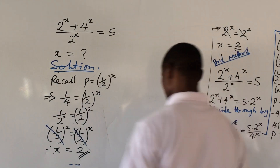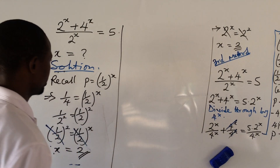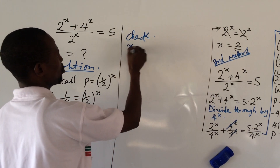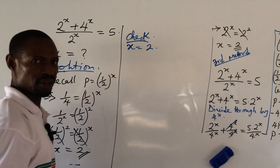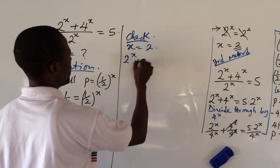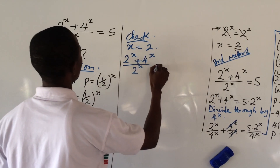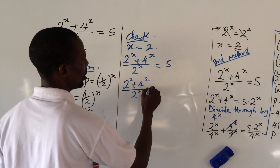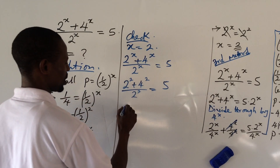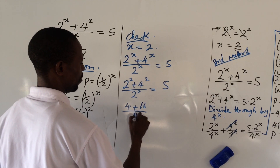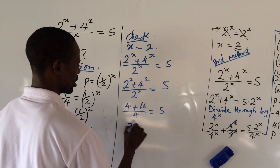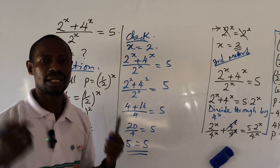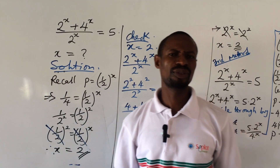Let's verify our answer. When x = 2, the expression (2^x + 4^x) / 2^x becomes (2^2 + 4^2) / 2^2 = (4 + 16) / 4 = 20 / 4 = 5. This equals 5, so our answer is correct.